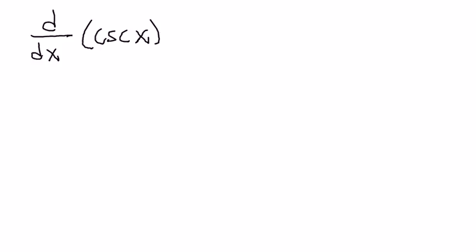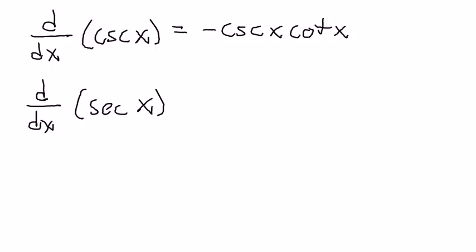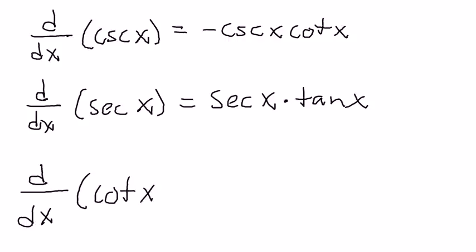The derivative of cosecant is negative cosecant of x times the cotangent of x. The derivative of the cotangent is negative cosecant squared of x.